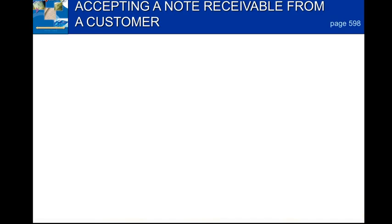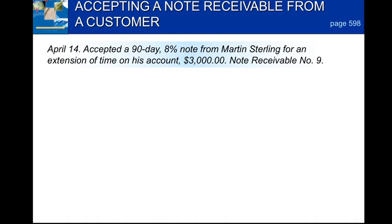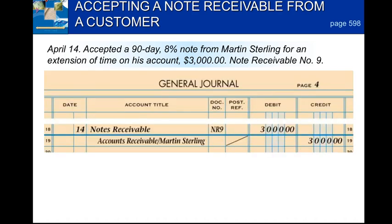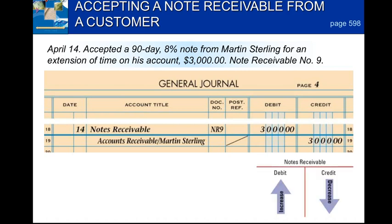We're accepting a note receivable from a customer. On April 14th we accepted a 90-day 8% note from Martin Sterling for an extension of time on his account for $3,000. The note receivable number is number nine. Cash is not exchanging hands — we're just giving an extension of time — so this is going to be put in the general journal. Notes receivables: debits increase, credits decrease, so we are going to debit to notes receivable.